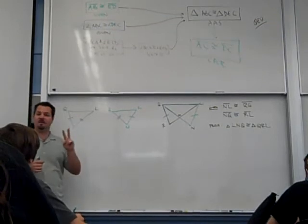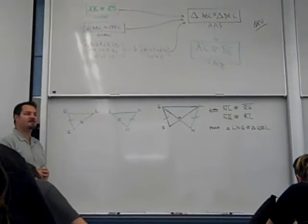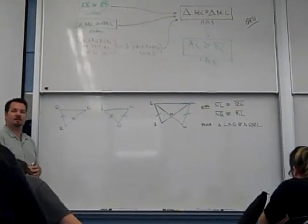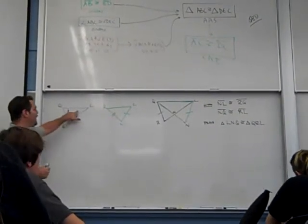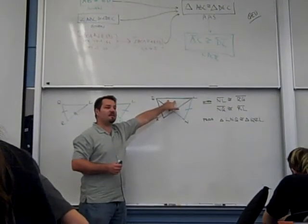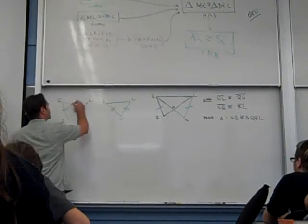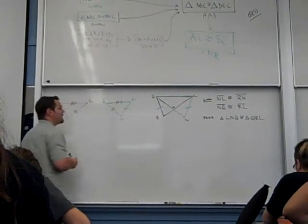How many pieces of information do I now show as congruent? Two. How many do I need to prove triangles are congruent? Three. So I'm short one. What's my missing piece, my hidden piece? QL is the same in both cases. It's a shared side. So they're congruent because they're the same. What's the rule for that? Reflexive property of congruence.